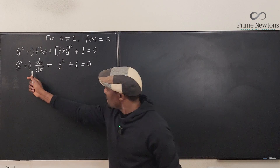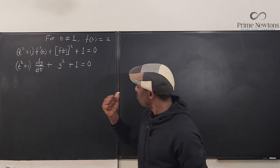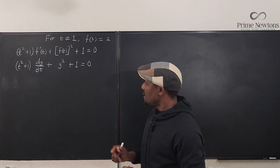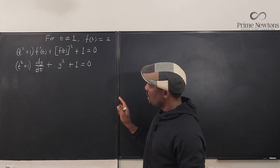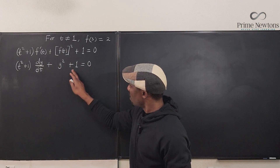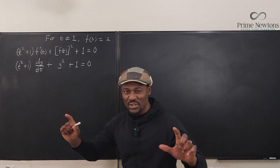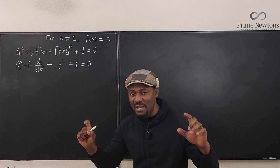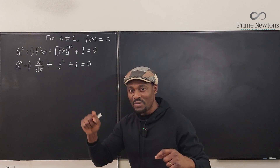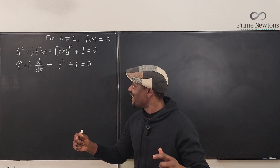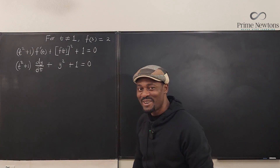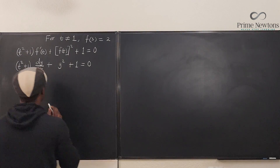This equation cannot be separated as-is — dt has to be on top. What I can do: we have y² + 1 and t² + 1, which is beginning to give me the vibes of the integral of 1/(t² + 1). It's beginning to look like Christmas! Let's go this way.